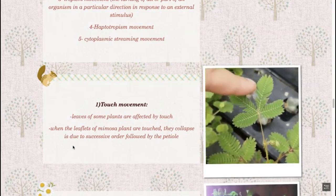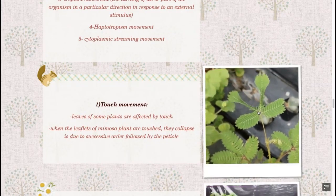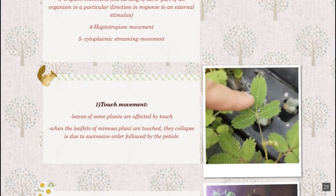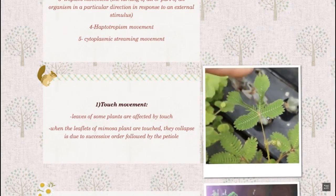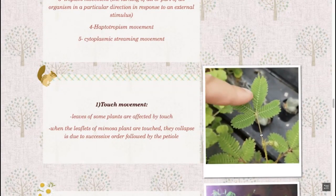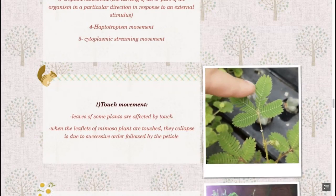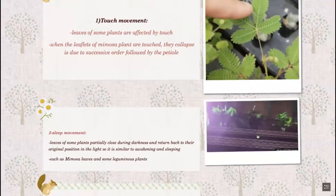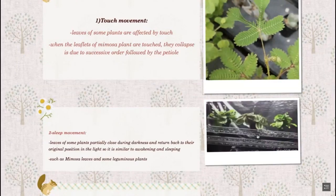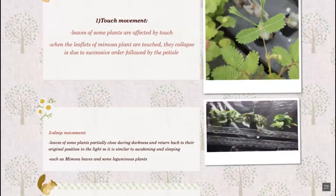This happens due to successive order followed by the petiole, because water starts to move from the upper part to the lower part. The lower part has more diffusion of water, so the water starts to move downward until it reaches the petiole, which causes collapse. The same reason - the upper part has more water diffusion and water moves from top to bottom, causing the plant to collapse.